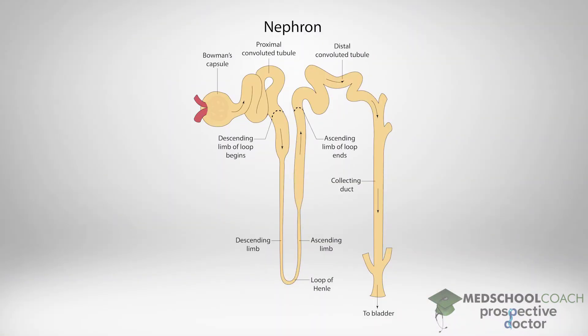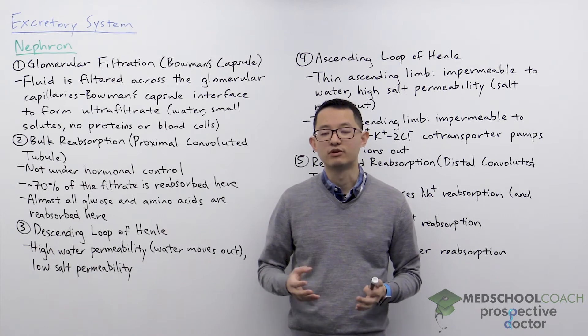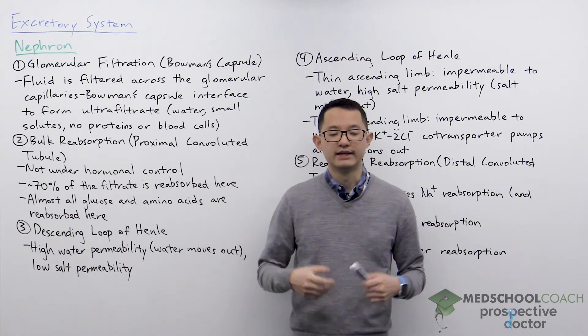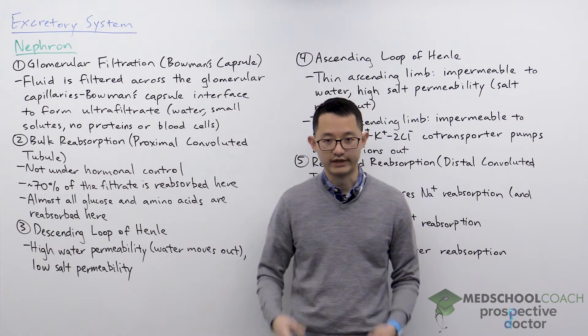It starts with the renal corpuscle, which consists of the Bowman's capsule and the glomerulus. We then have the proximal convoluted tubule, the loop of Henle which has both a descending portion and an ascending portion, the distal convoluted tubule, and the collecting duct. In this video we're going to look at how each component of the nephron is involved in the production of urine.